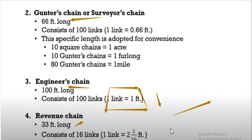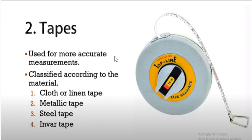Then coming to the tapes. Tapes are used for more accurate measurements, classified according to the materials: cloth or linen tape, metallic tape, steel tape, or invar tape. Here we basically use metallic tape.